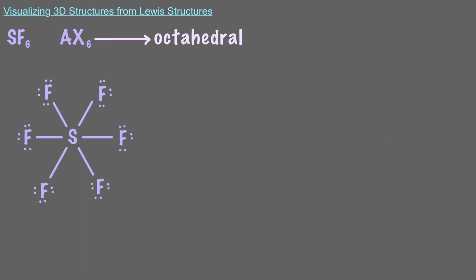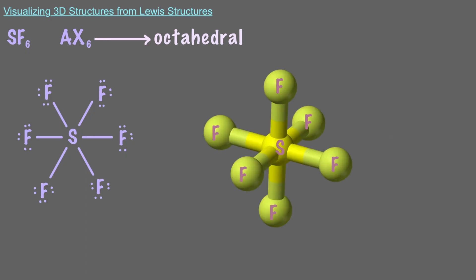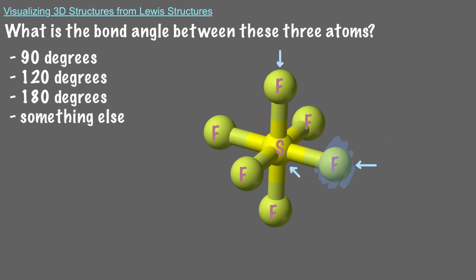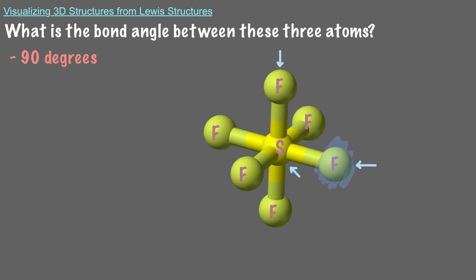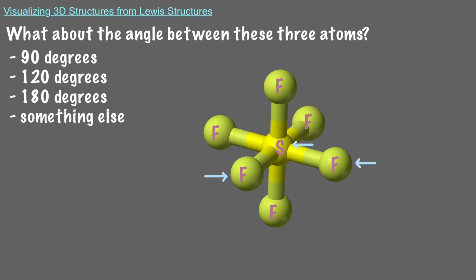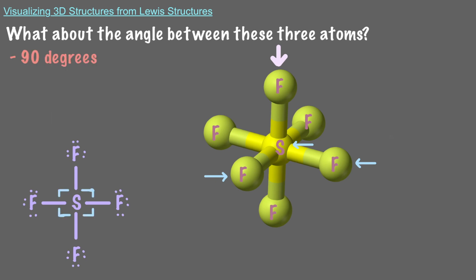Let's do one last example. SF6 has 6 atoms attached to the central atom and no lone pairs, so it classifies as AX6. That means our 3D shape is octahedral. In 3D, it looks like this — it kind of resembles two square pyramids glued together. An atom on the equatorial plane makes a 90 degree angle with both of the axial fluorines. If we view the molecule from the top, we can see that they are all in the same plane and also make 90 degree angles with each other. That means all atoms in an octahedral molecule make 90 degree angles with each other.